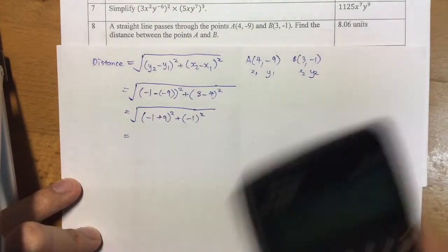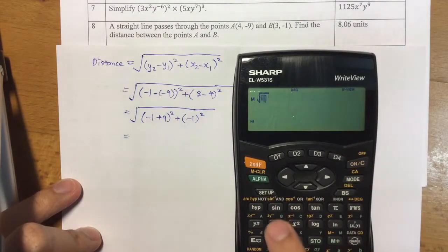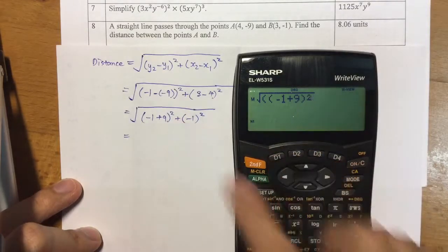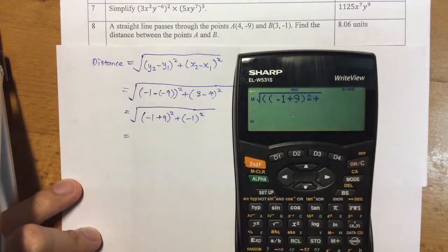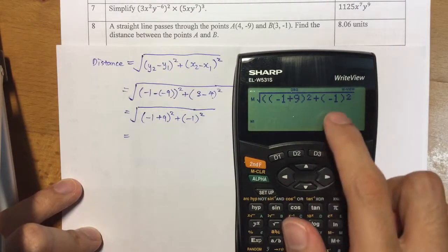Put another bracket, so I have the first one: negative one plus nine, squared. We still have the second value, so add it to negative one squared.